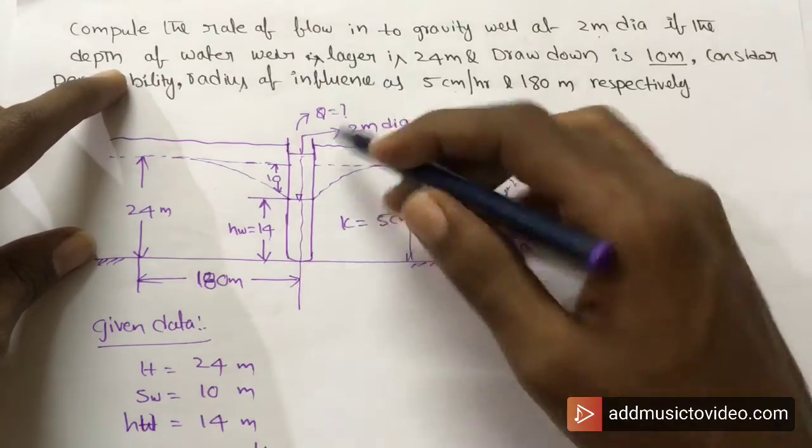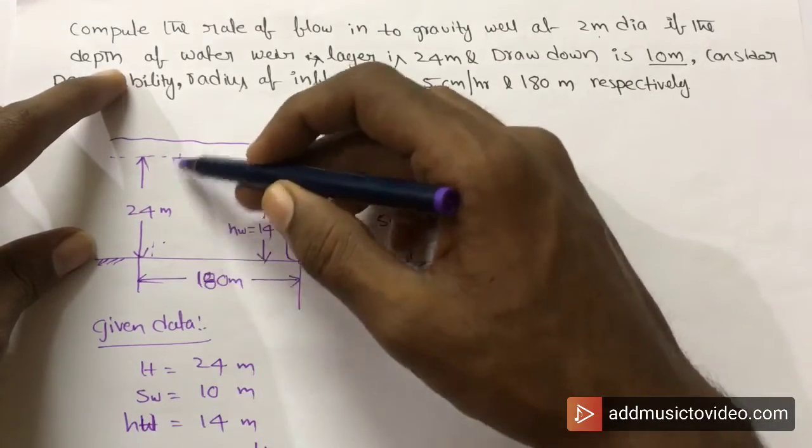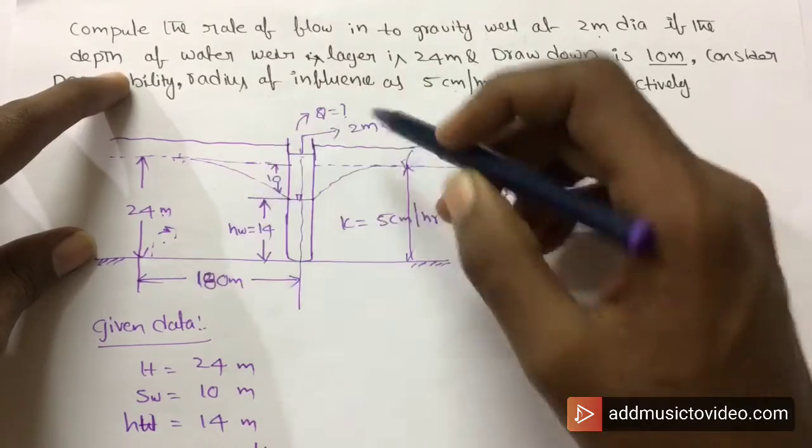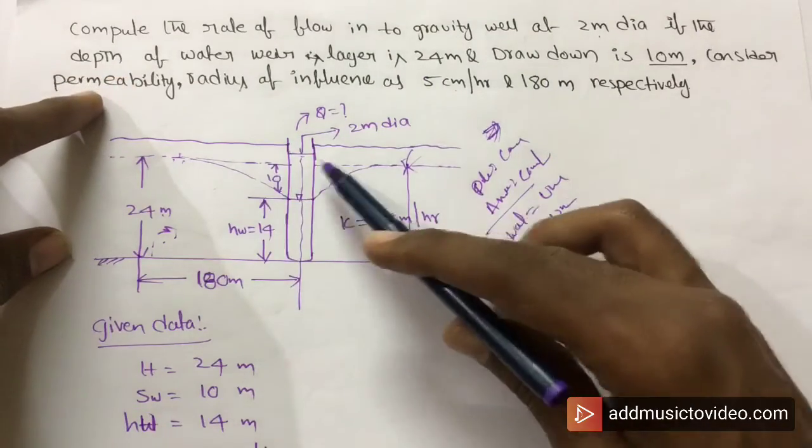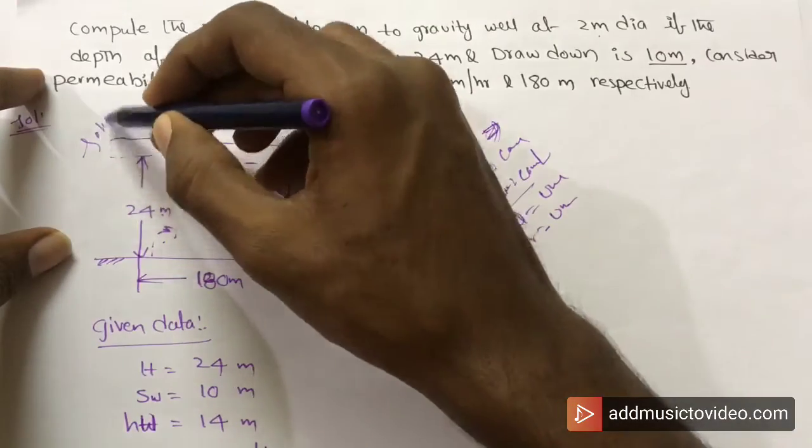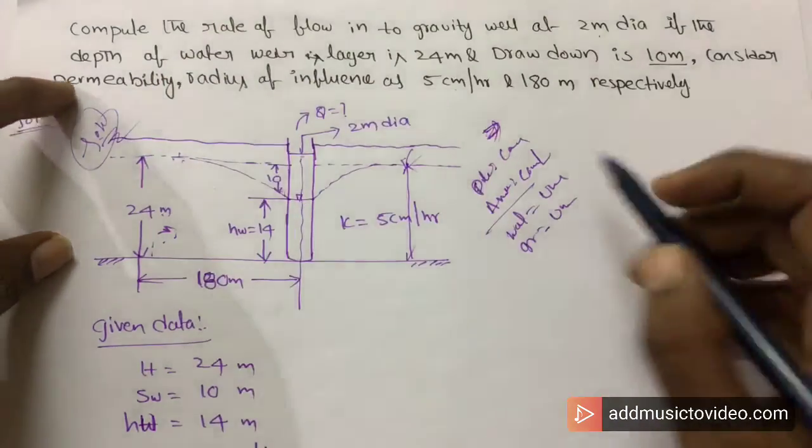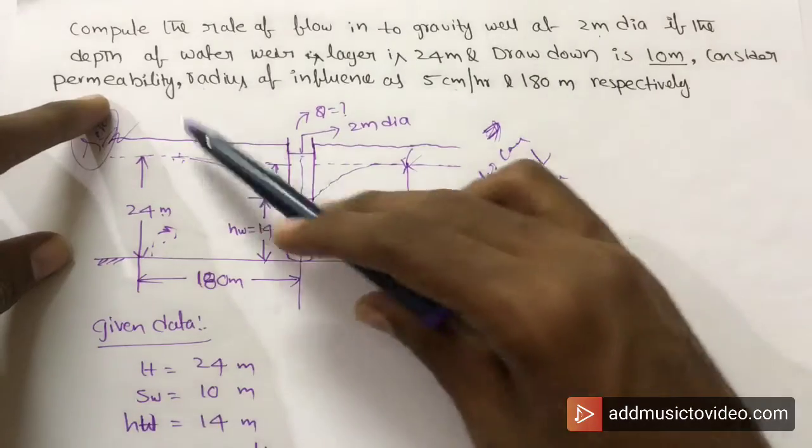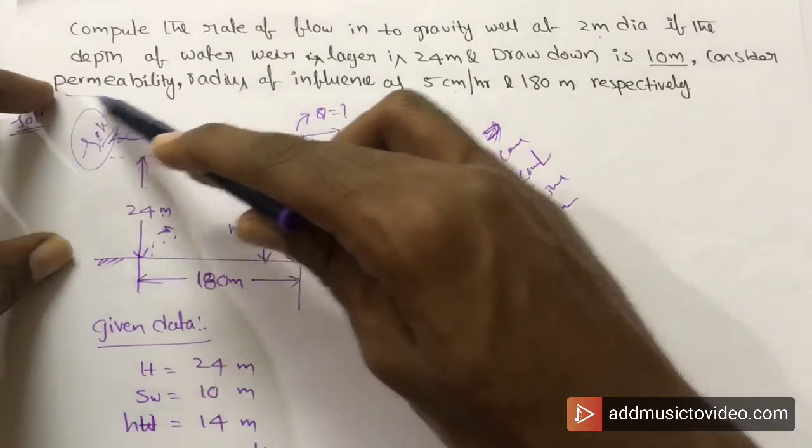Depth of water layer is 24 meters. Drawdown is 10 meters. Consider the permeability and radius of influence.